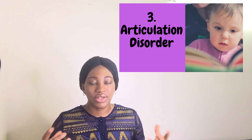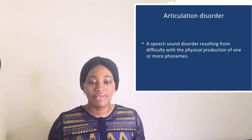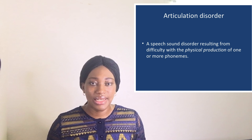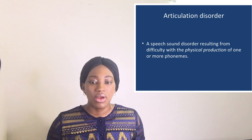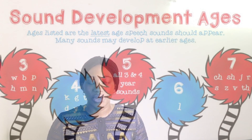Number three: Articulation disorders. Articulation disorders affect the ability of a child to produce certain sounds correctly. For example, certain sounds like R, S, T, and G may be difficult to pronounce.